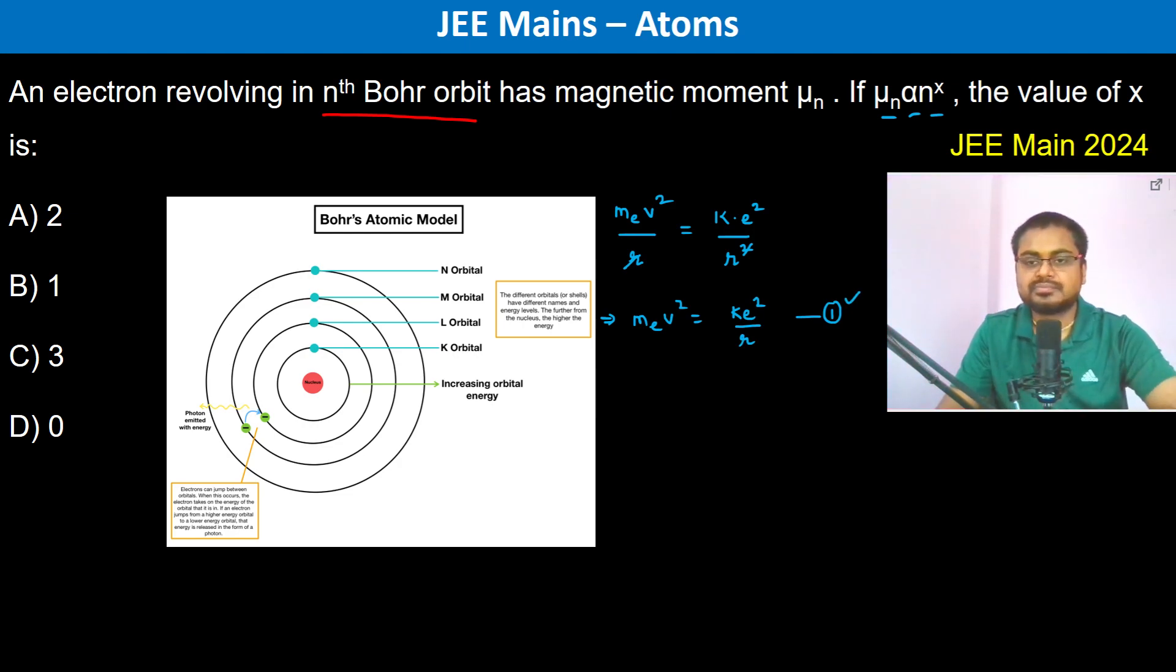Now we have also mv into r is equal to n into h divided by 2π. These are the two basic equations and with these equations we are going to solve the entire thing.